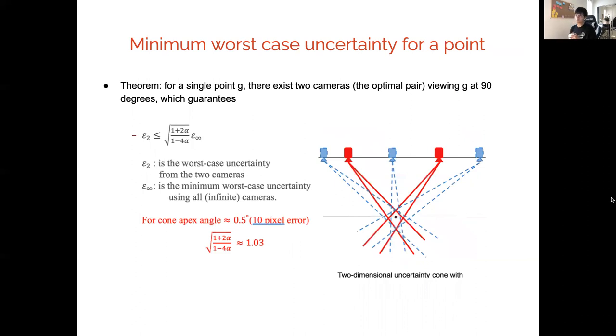Using this model, we can find a minimal worst case uncertainty for a point. Our theorem states that for a single point, there exists two cameras, the optimal pair viewing this point at 90 degrees, which guarantees a particular approximation ratio compared to infinitely many cameras on this line.